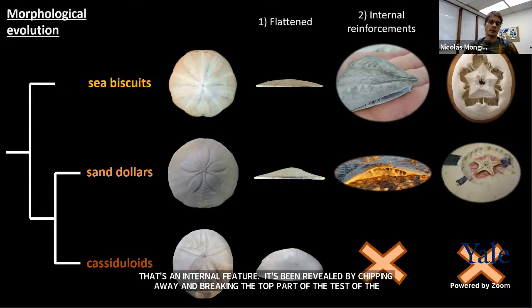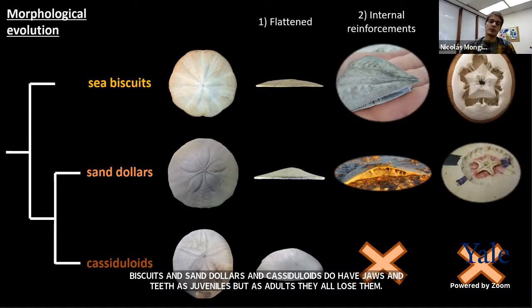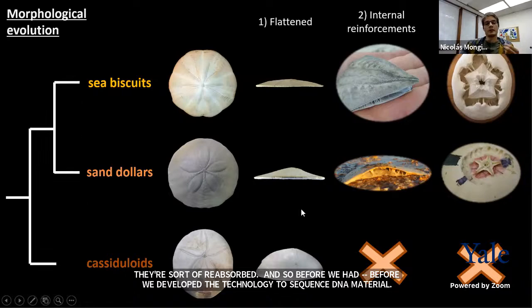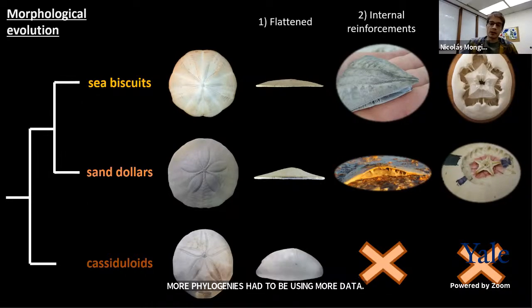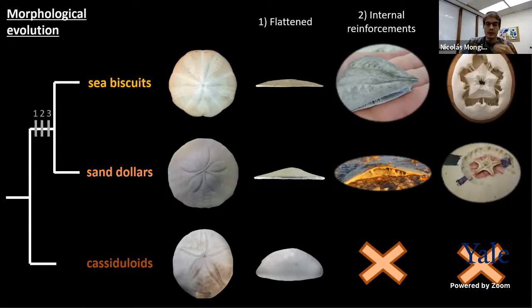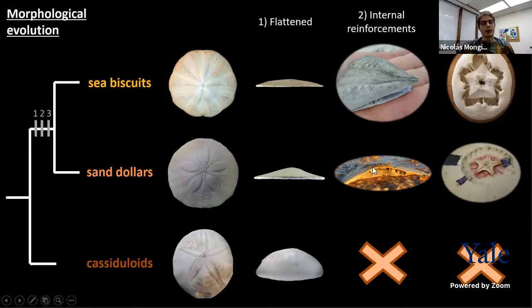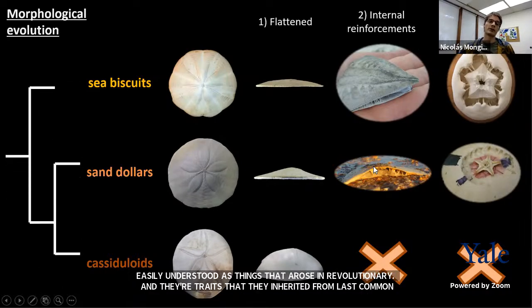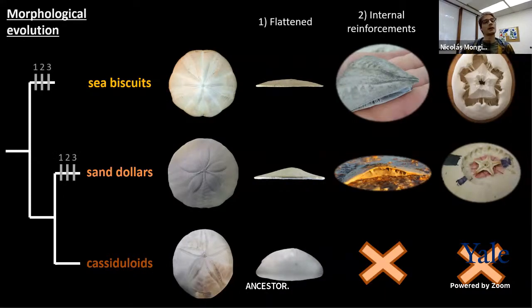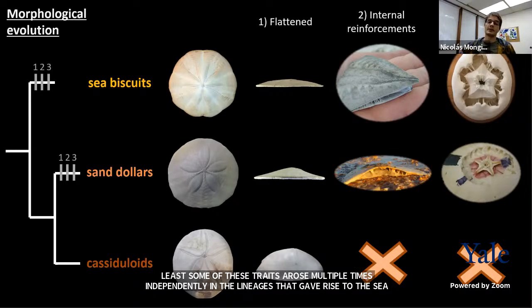Before we developed the technology to sequence DNA, phylogenies had to be inferred using exclusively morphological data. Based on all the shared attributes of sea biscuits and sand dollars, those morphological phylogenies always assumed they were each other's closest relatives, basically because all those traits are more easily understood as arising only once in evolutionary history, with both clades simply inheriting from their last common ancestor. But our genome-scale phylogenies have taught us this is not the correct interpretation — it's actually more likely that at least some of these traits arose multiple times independently in the lineages that gave rise to sea biscuits and sand dollars. This is quite surprising because it's not just one or two features, but many.